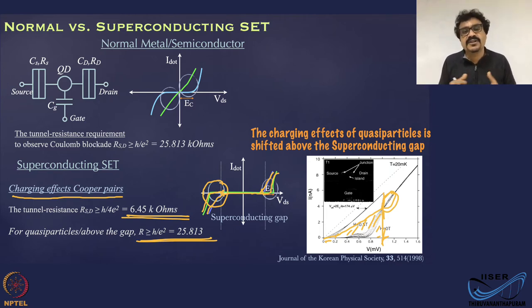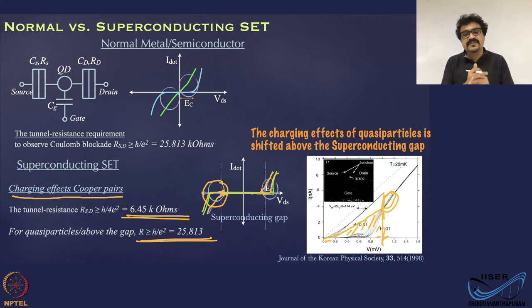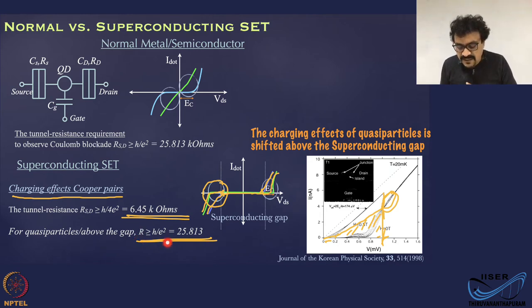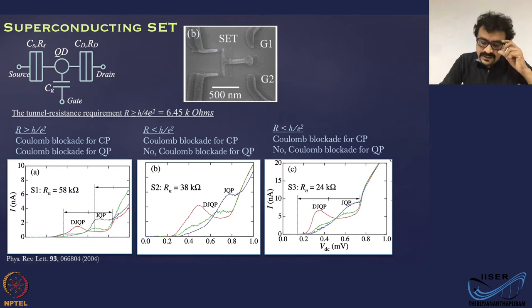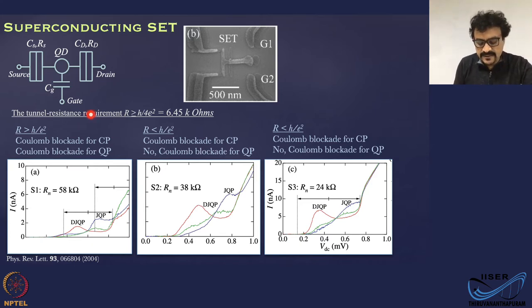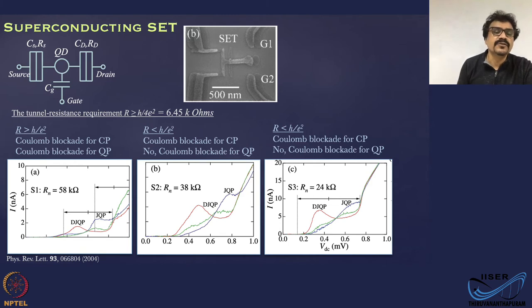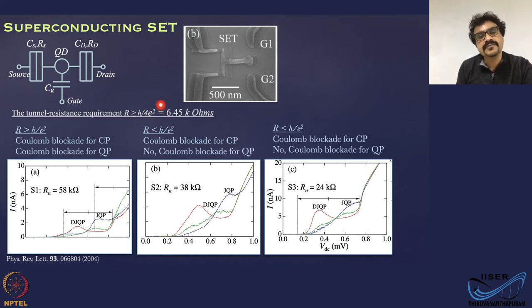A superconducting SET is often preferred over a normal state SET because you need only lower resistance to see the charging effects of Cooper pairs. The quasiparticle charging effects require higher resistance, which can have detrimental effects for various technologies. The tunnel resistance requirement for observing charging effects involving Cooper pairs is not 25.8 kilo-ohm, but one-fourth of that — approximately 6.45 kilo-ohm — because the Cooper pair charge is 2e.